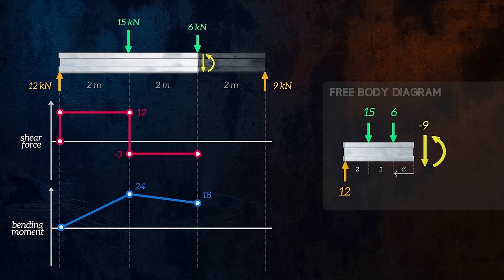No loads are acting on the small 1 meter section to the right of the distributed force, so shear forces and bending moments in that section will be equal to zero. Although we can't calculate displacements from these diagrams, we can use the bending moment information to predict the deformed shape of the beam. Where the bending moment is positive, the beam will be sagging. Where it is negative, it will be hogging. Where the bending moment is zero, the beam will be straight, giving us a deformed shape that looks something like this.